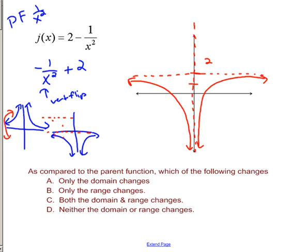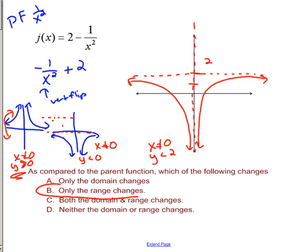What has changed? Originally I could not have x equal 0 and y was only greater than 0. After the flip, my range changed to y less than 0. After shifting up 2, x still can't equal 0, and y is now less than 2. So what has changed from original to final is only the range.